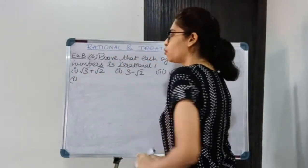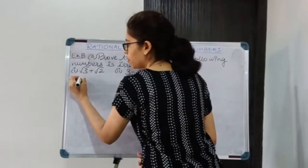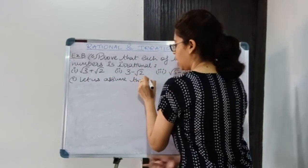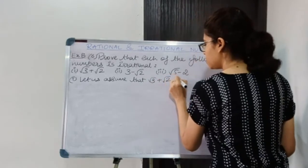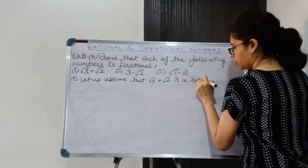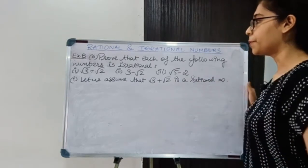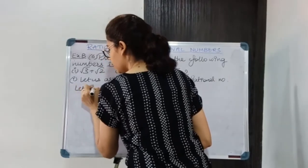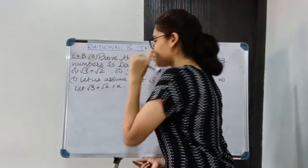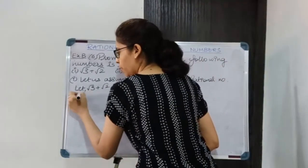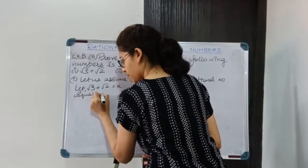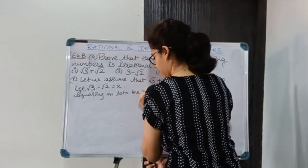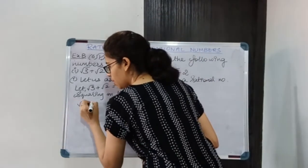That is, √3 + √2. We will assume that it is a rational number. So let us assume that √3 + √2 is a rational number. Now let it be equal to some value x. So √3 + √2 = x. Now, squaring on both sides, I will get (√3 + √2)².